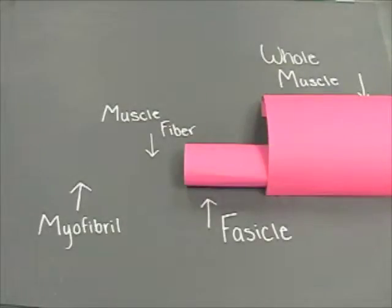Each muscle is made up of many fascicles. These are bundles of muscle fiber. These bundles are also covered by connective tissue, which is called perimysium.